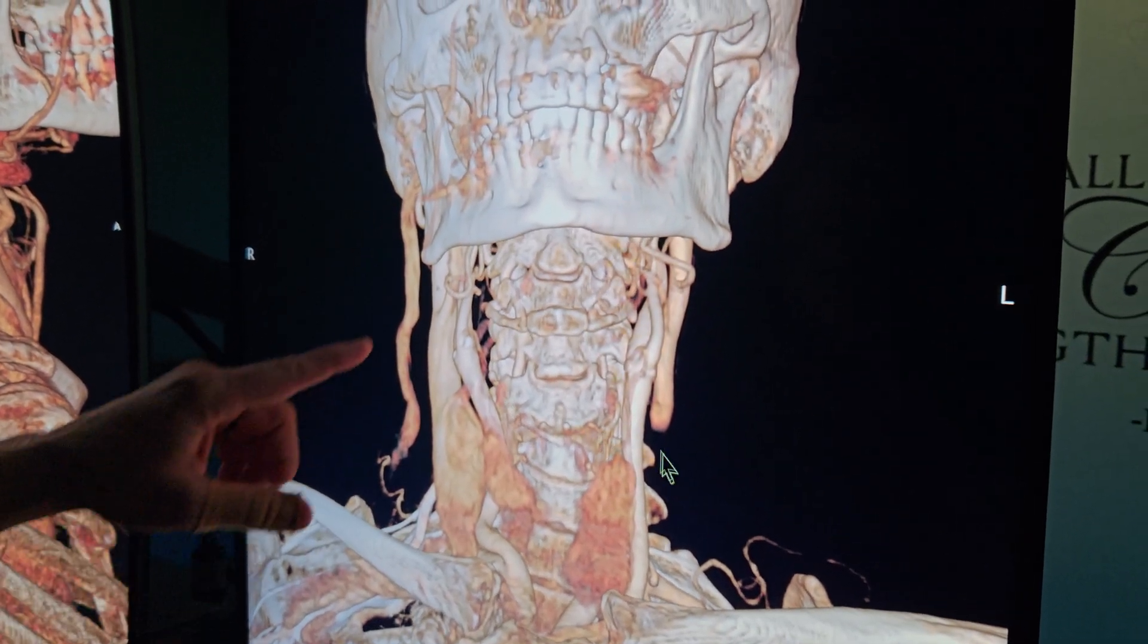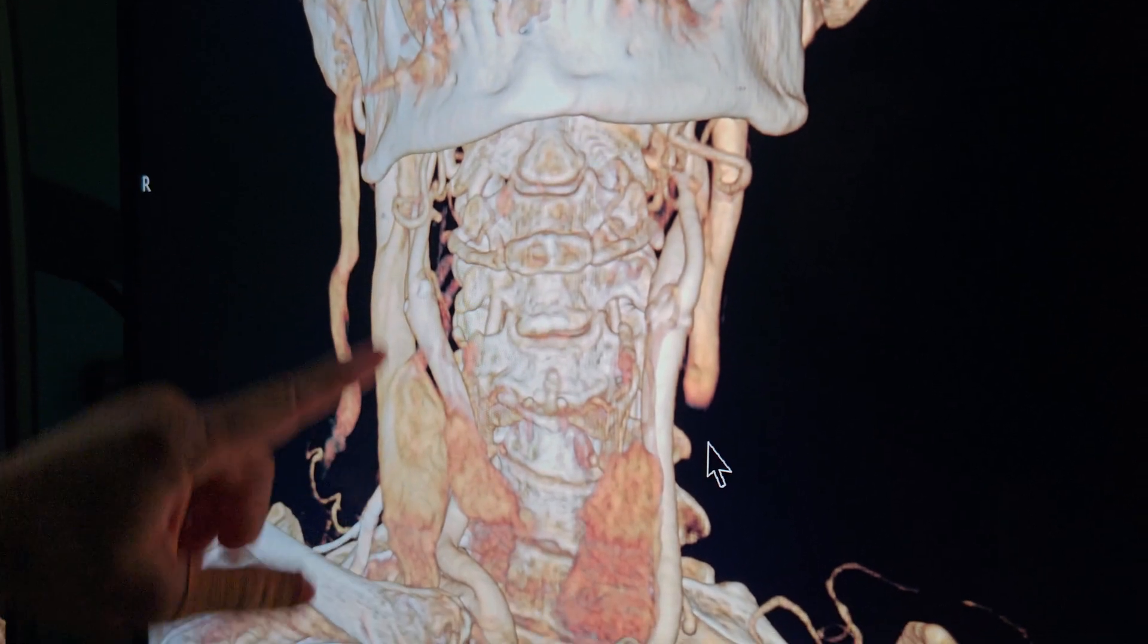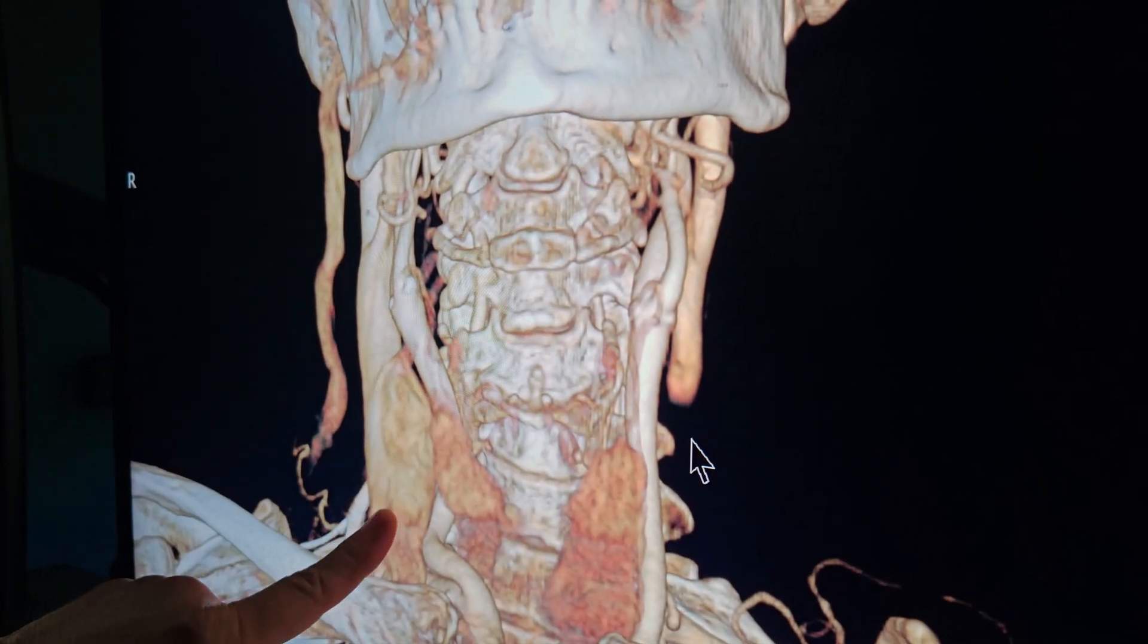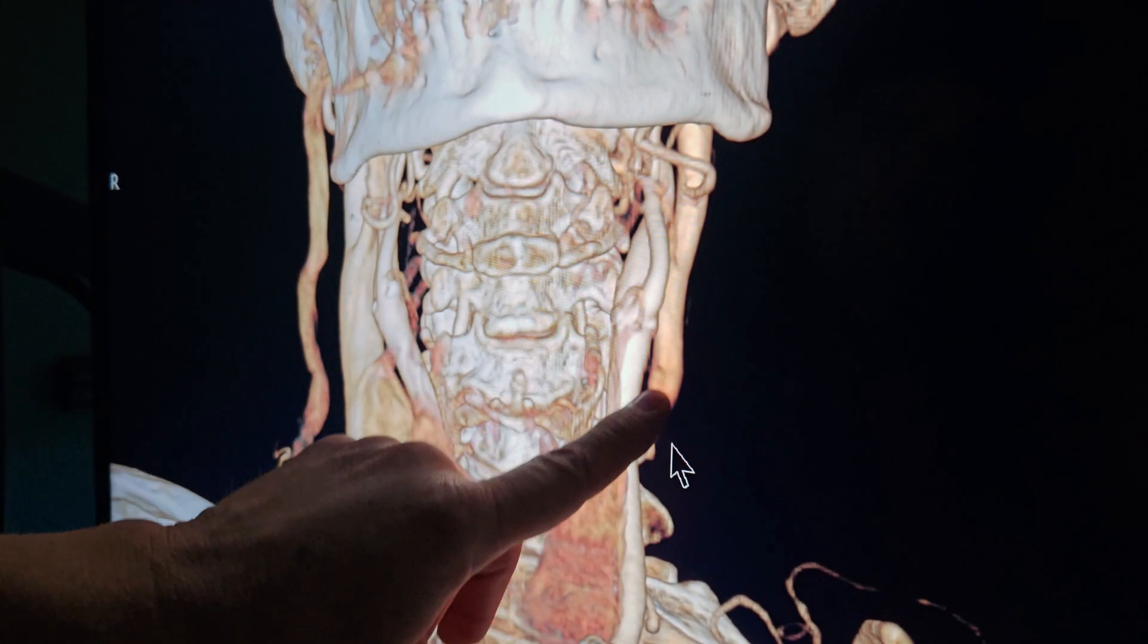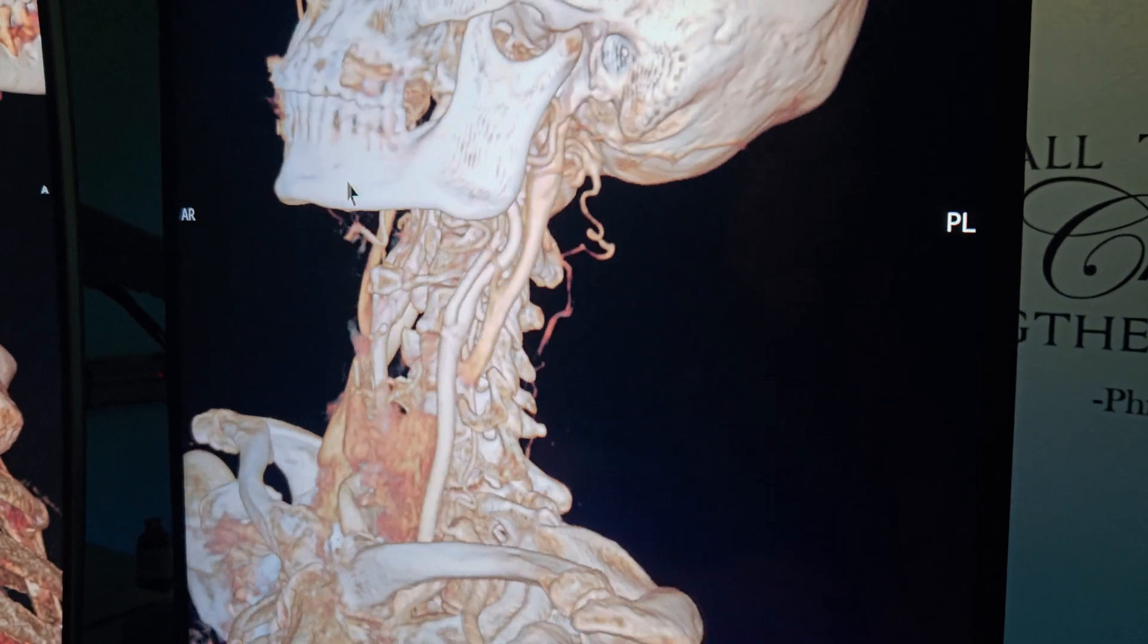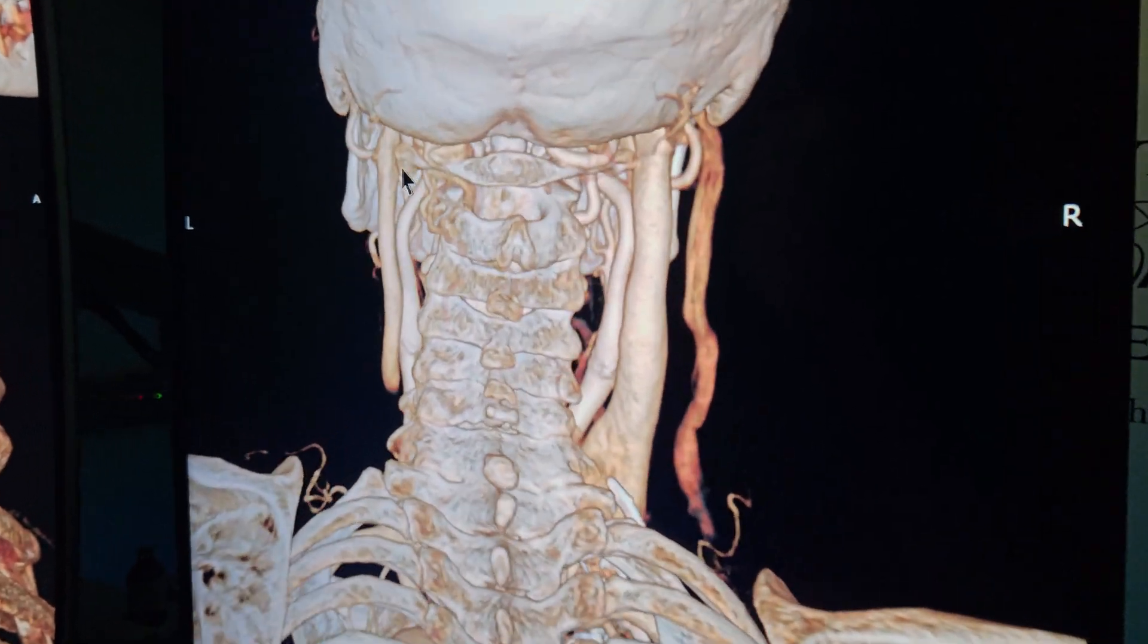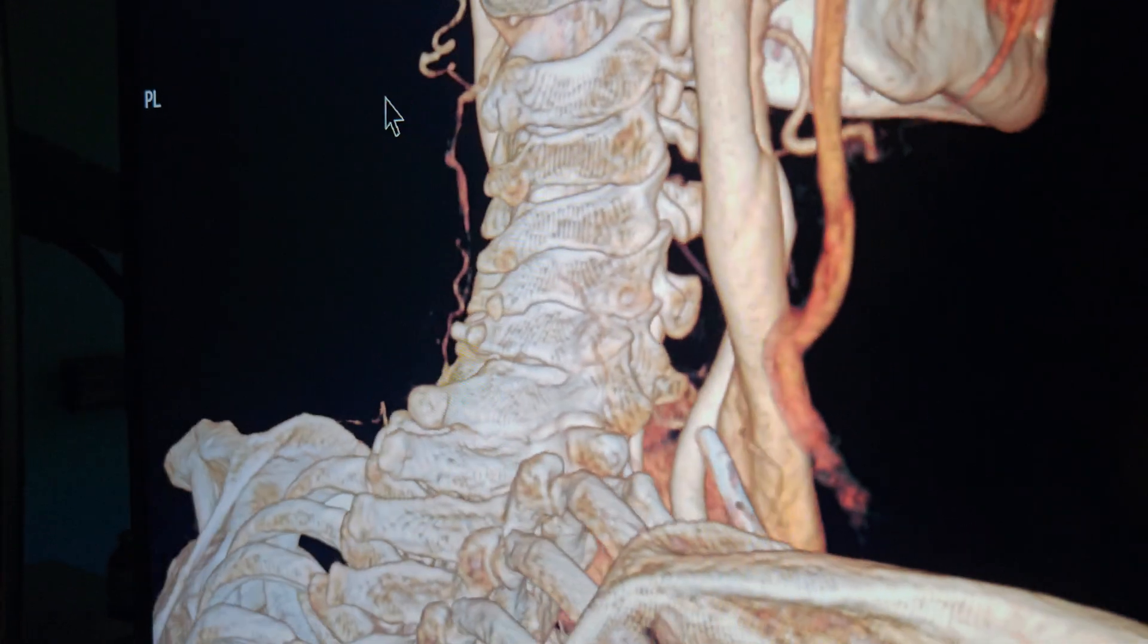So here we can see the dilated jugular vein on one side, obviously that it's dominant. The jugular vein on the left stops right there. It just doesn't go anywhere. There's been no surgery in this neck. That's just the way she looks.